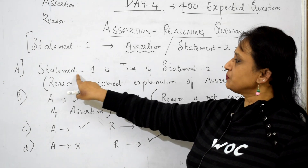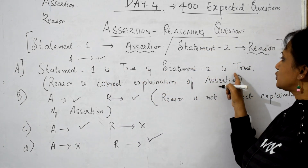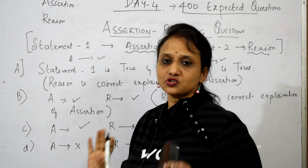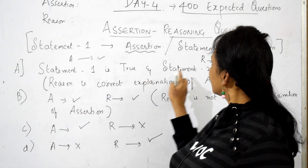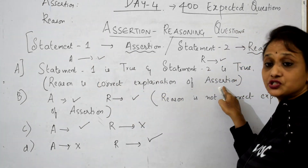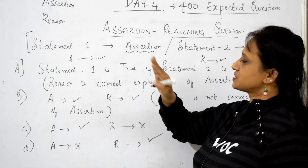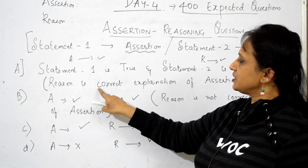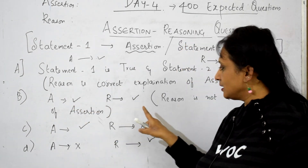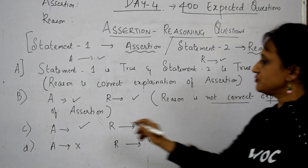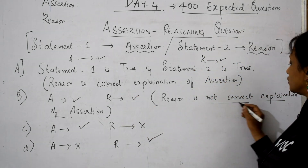Option A: statement 1 is true — that means assertion is true — and statement 2 is true — that means reason is true — and reason is a correct explanation of assertion, meaning reason supports the assertion statement. Option B: assertion is correct, reason is also correct, but reason is not the correct explanation of assertion. In option A reason is the correct explanation; in option B reason is not the correct explanation.